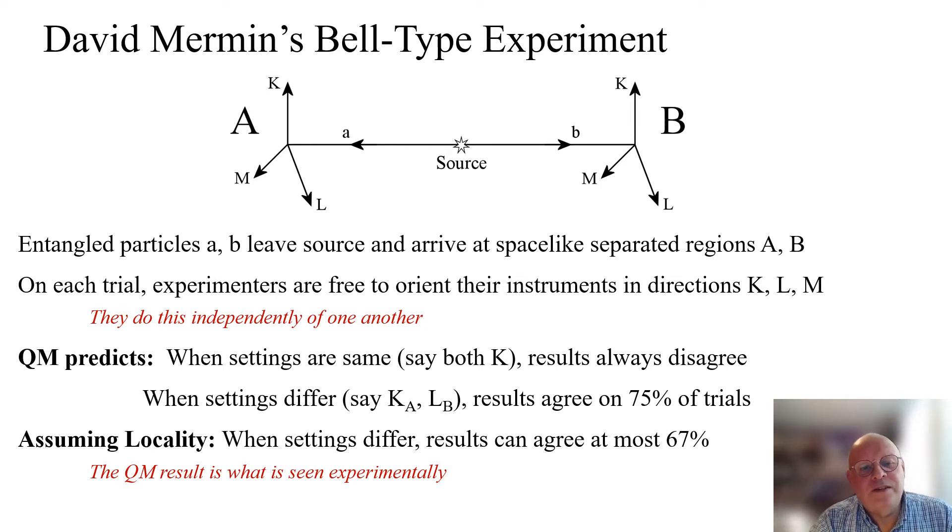But when settings differ, results can agree by at most 67%. This is Bell's theorem. But the quantum mechanic result is what is actually seen experimentally.